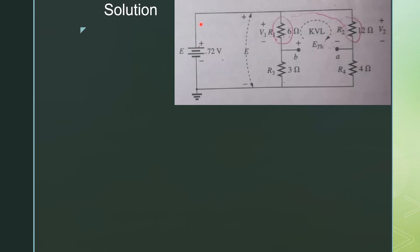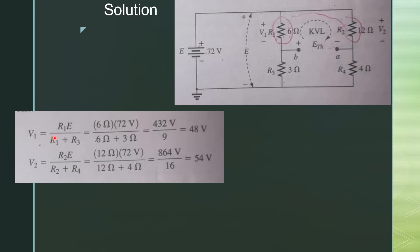From the figure, you will see that E is basically parallel to these two resistors and also to these two resistors. So the voltage at this point is equal to 72 volts, and also at this point is 72 volts. We apply the voltage divider rule to this loop to find the value of V1. So V1 is equal to R1 times E divided by R1 plus R3. Substituting the values, we get V1 equal to 48 volts.